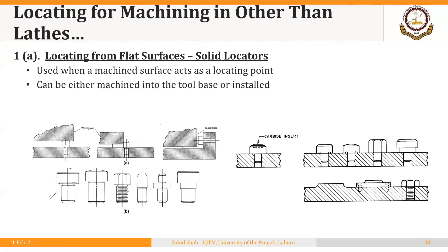Solid locators are used when a machined surface acts as a locating point. If we have a perfectly flat surface that has been finished using milling or a grinding operation, then we use solid supports. These supports are called solid supports because they are fixed — they can be either machined into the tool base or installed in a hole in the base of the fixture or jig.